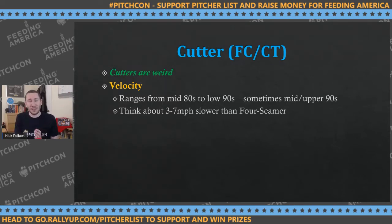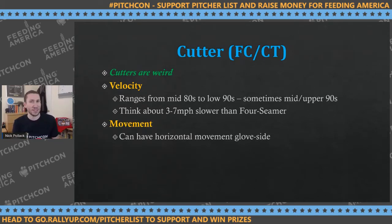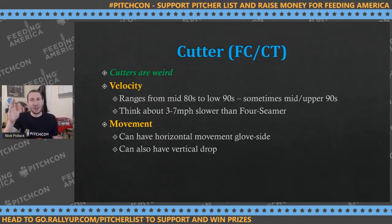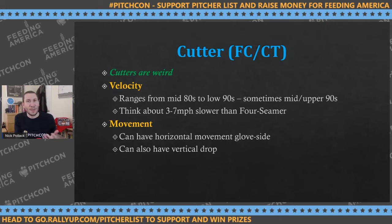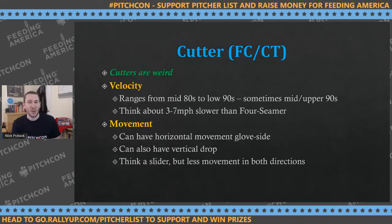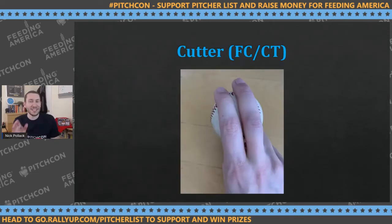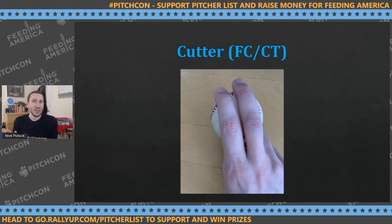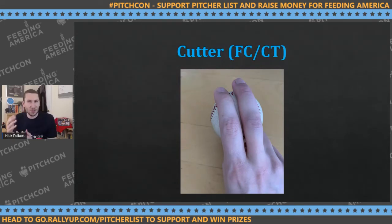The cutter movement is generally horizontal glove side with just a tinge of it, and then vertical drop as well — like a slider's diagonal but less amplified. Think of Mariano's cutter: it had movement you could tell, but it wasn't a breaking ball type of movement. The cutter grip is a mix between your four-seamer and your slider. Some people just throw a four-seamer with natural wrist tilt that creates cut action, and it just turns into a cutter.